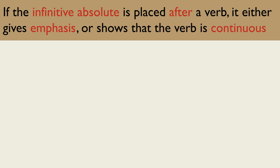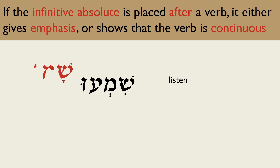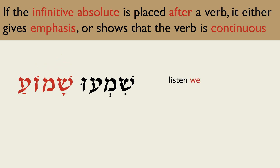The imperative shim'u means 'listen.' If an infinitive absolute is placed after it, it either means 'listen well,' emphasising the listening, or it means 'listen continuously.'